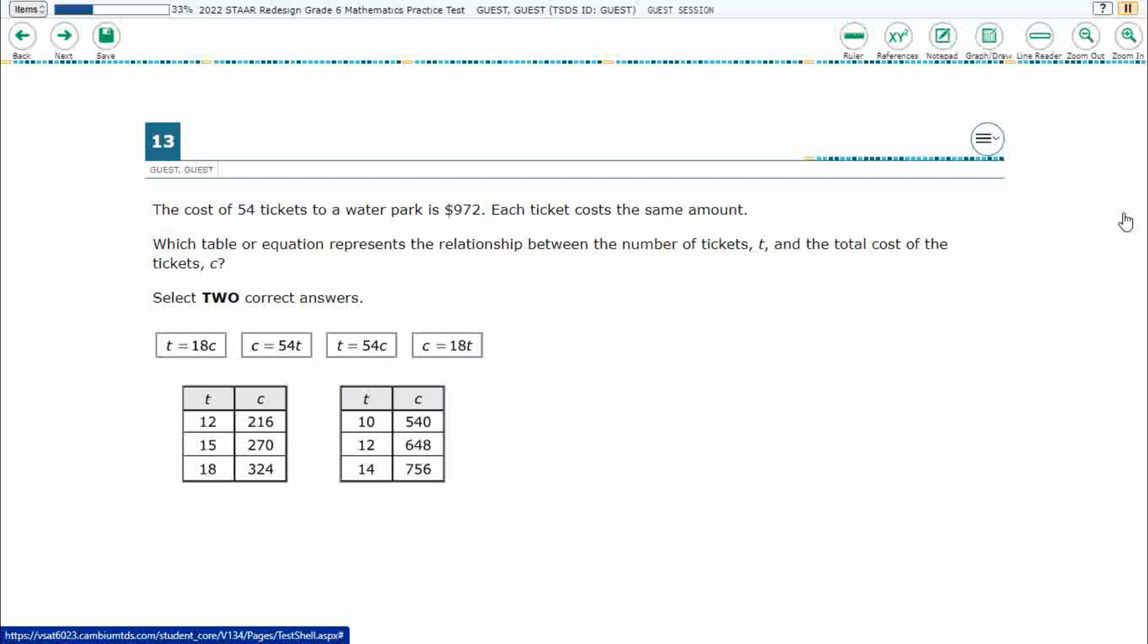We have the cost of 54 tickets to Waterpark is $972. Each ticket costs the same amount. Which table or equation represents the relationship between the number of tickets and the total cost of tickets? I need to select two correct answers.